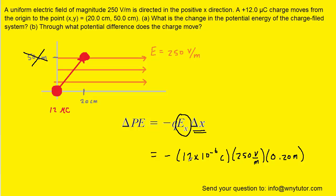Notice that we converted the charge from micro coulombs into coulombs by multiplying by 10 to the minus 6. We also converted the displacement in the x-direction from centimeters into meters. So when we multiply this all out, we get approximately negative 6 times 10 to the minus 4 joules for the change in electrical potential energy of the charge field system.